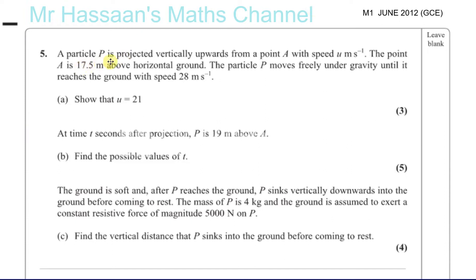A particle P is projected vertically upwards from a point A with speed u meters per second. The point A is 17.5 meters above horizontal ground. The particle P moves freely under gravity until it reaches the ground with a speed of 28 meters per second. Show that u is equal to 21.